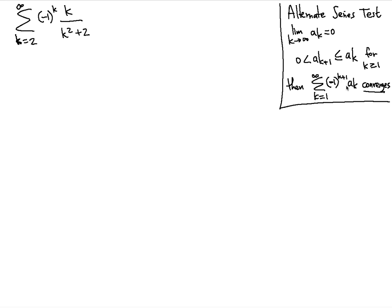So negative 1 to the k plus 1 is separate from a subscript k. So we're taking the limit as k approaches infinity of k over k squared plus 2.